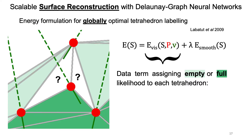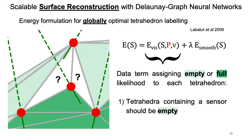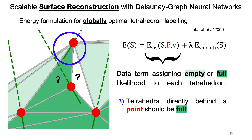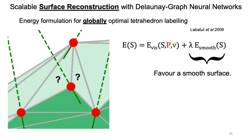The common approach to solve this problem is to find a globally optimal empty-full labeling by minimizing an energy such as the one introduced by Labattu et al. This energy formulation is based on a data term which achieves three things: first, tetrahedra containing a sensor should always be labeled empty; second, neighboring tetrahedra crossed by the same line of sight should have the same label; and third, cells directly behind an input point should be classified as full. In conflicting areas, labels are propagated based on a prior that favors smooth surfaces, and this energy is efficiently minimized using graph cuts to find a globally optimal empty-full labeling for all tetrahedra.